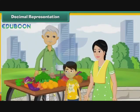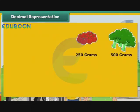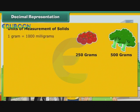Akshay accompanied his mother to the vegetable market, where he saw her buy 250 grams and 500 grams of different vegetables. He wanted to express the quantities purchased as kilograms. To do so, Akshay must first understand the units used to measure quantities of solids. 1 gram is equal to 1000 milligrams. Therefore, 1 mg is equal to 1 by 1000 gram, that is 0.001 gram.